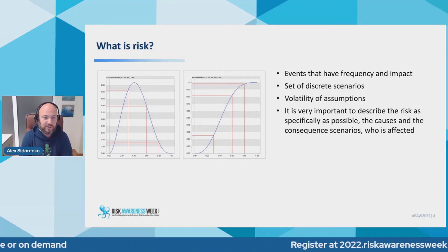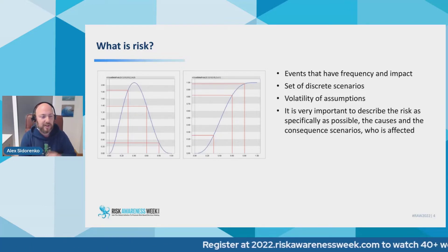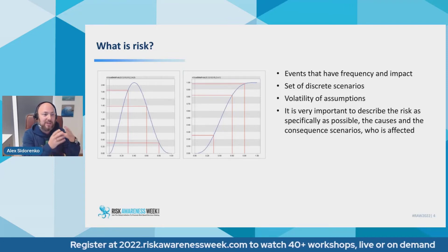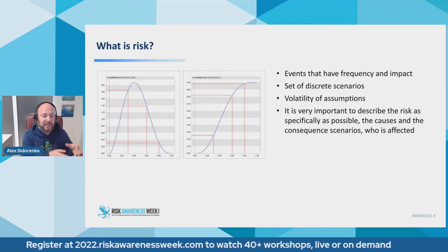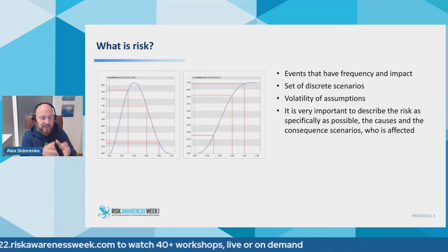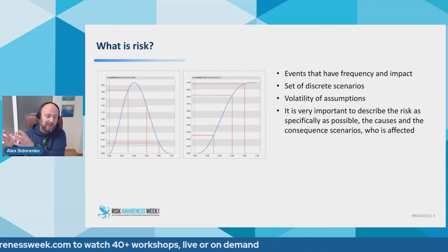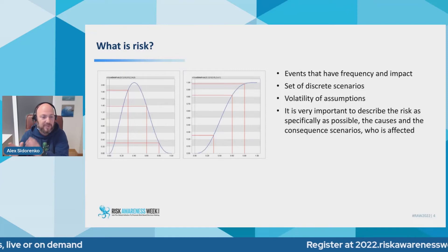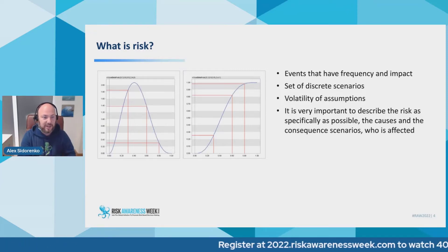I'll give you some examples of that. So number one, risk is some uncertain event that, if it happens and however many times it happens, may have some uncertain impact on the cash flow or some other objective. That's just one example of what risk is.